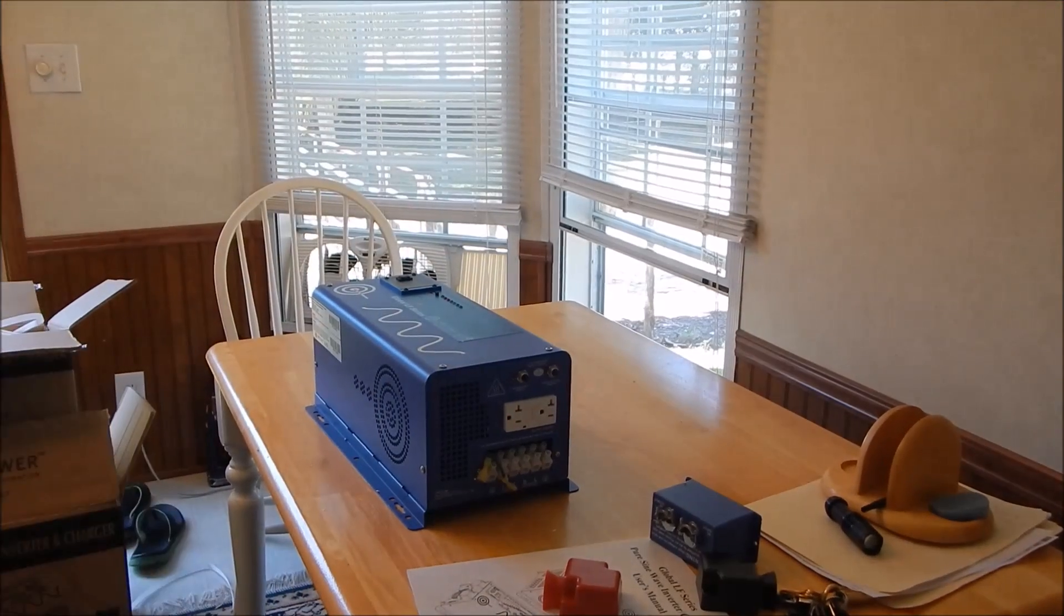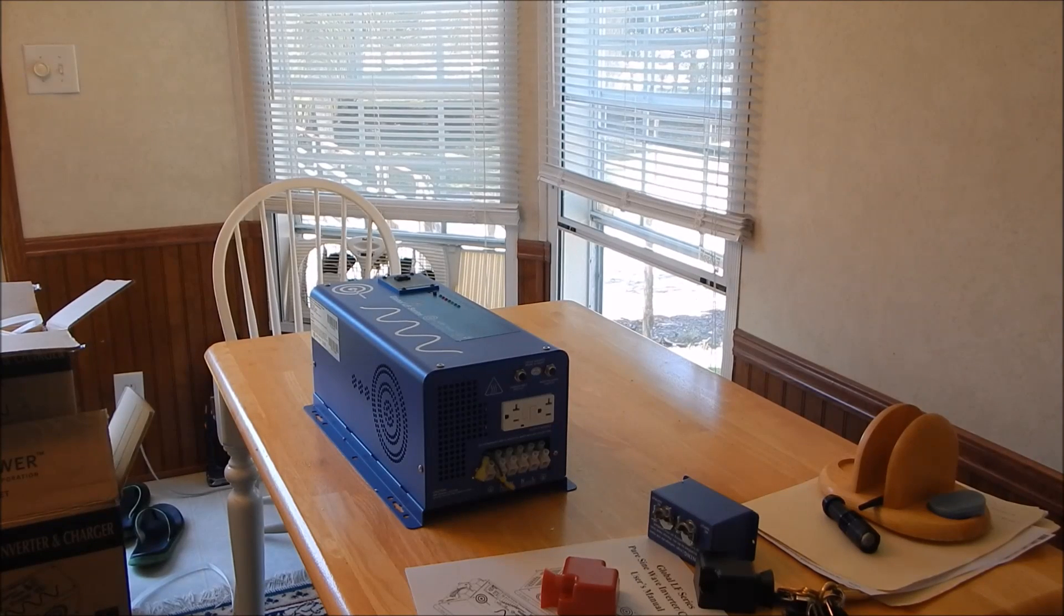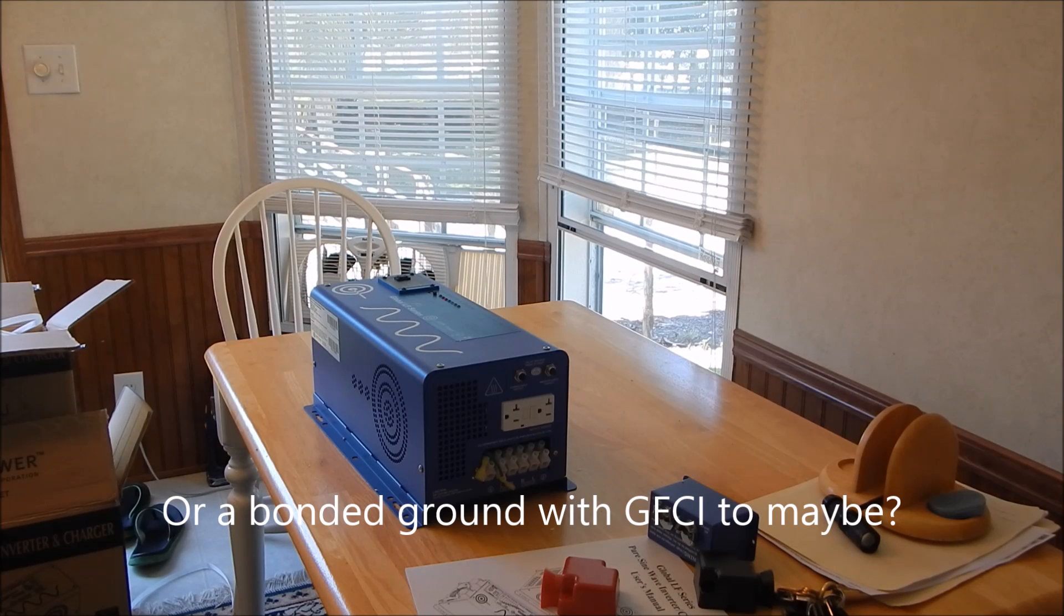I installed a transfer switch on my power panel and hooked it all up and plugged it into that Go Power. And the Go Power does not want to be hooked up to the transfer switch. It automatically trips the GFCI. There's too much noise in that box. So this one is going to get hardwired into my six-switch transfer switch.